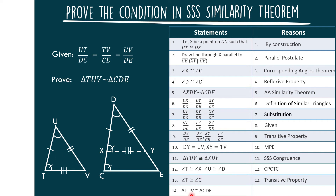Therefore, we can conclude that triangle TUD is similar to triangle CDE by AA similarity.